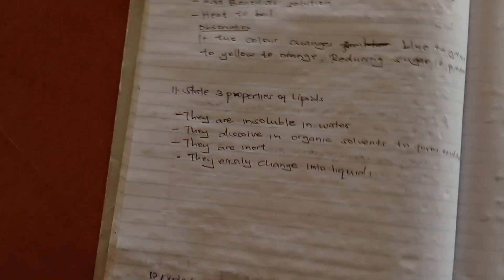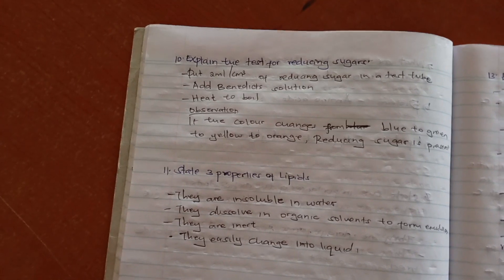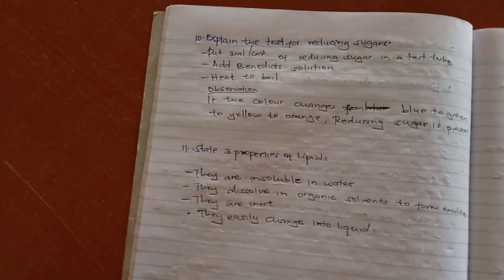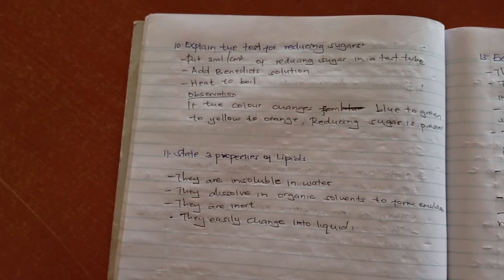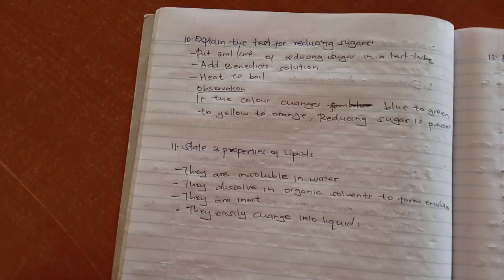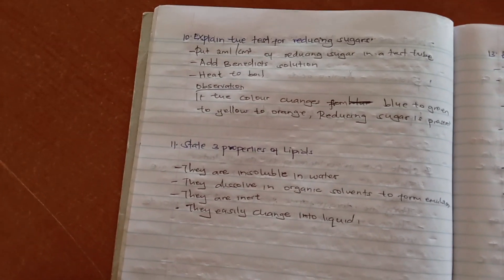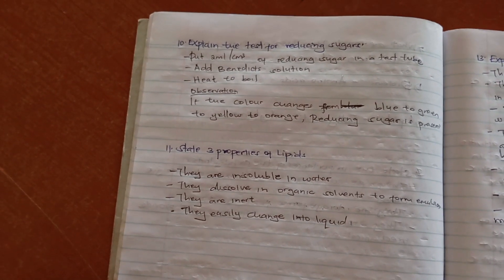Explain the test for reducing sugars. So you put 2 cm³ of reducing sugar into a test tube. Then you add Benedict solution. You heat and boil.